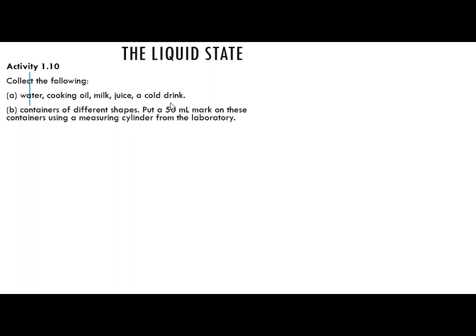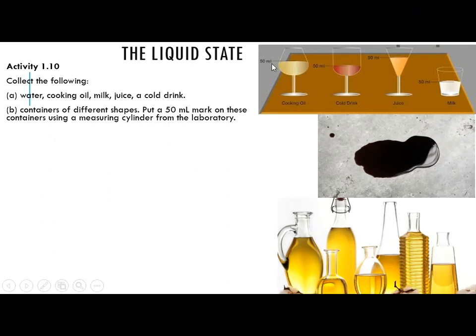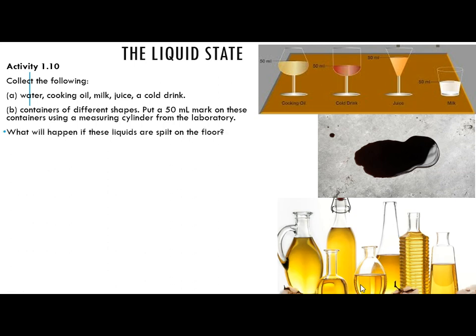Take measuring cylinder, take 50 ml of water, pour it in one of the containers, mark it, then take that water in another container which is having a different shape, mark it. So like that you have to mark. We are having different glasses of different shapes, and in each we have taken 50 ml of the sample. You can see there is a lubricant — that is oil — which is spilled on the floor, and different containers in which we have taken some amount of oil, only for reference purpose.